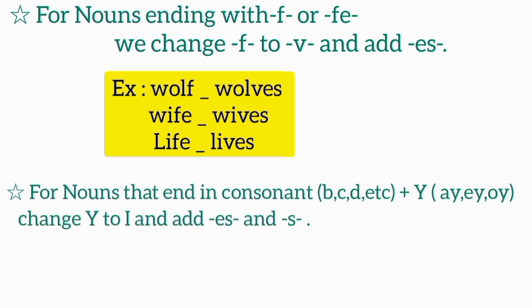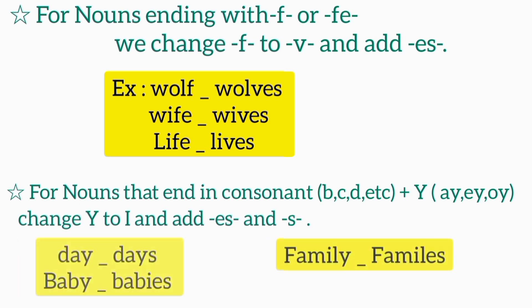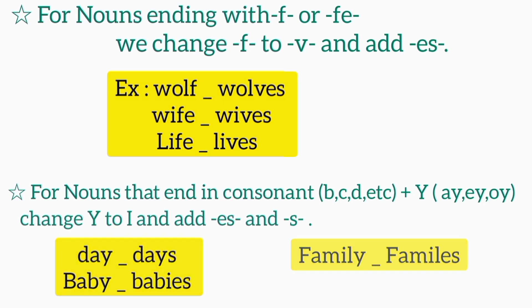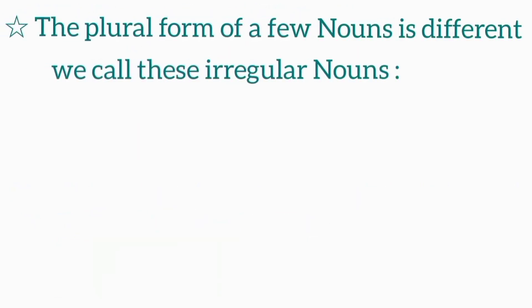For nouns that end in consonant B, C, D, etc. plus Y, change Y to I and add ES. For example, day, days; baby, babies; family, families. The plural form of few nouns is different. We call this irregular nouns.